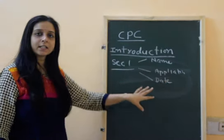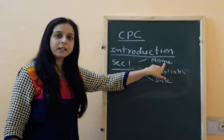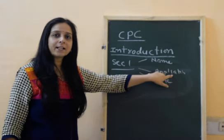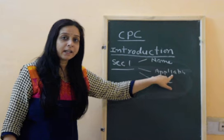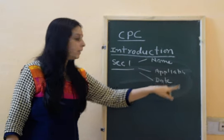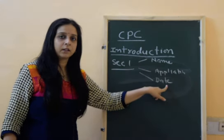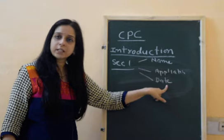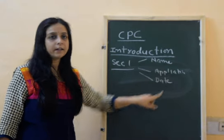This section is divided into three parts: name — CPC 1908; application — to all over India except Jammu and Kashmir, Nagaland, and tribal areas; and third, the date of commencement, which is 1st January 1909.